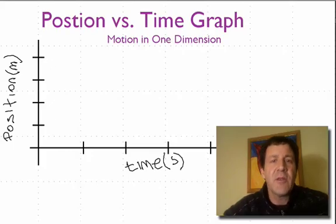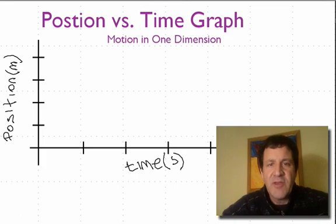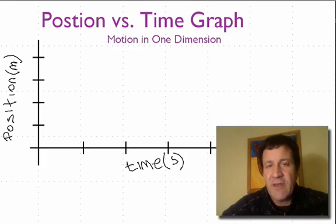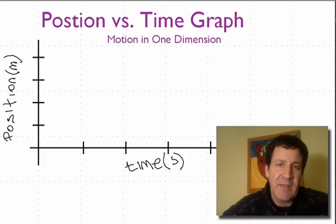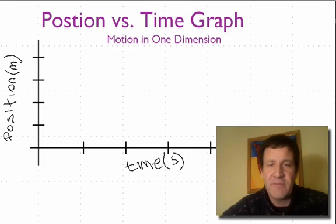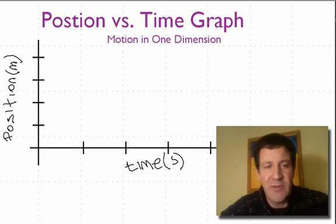In this video, I'm going to go over some more information about position versus time graphs. This is kind of part two of position versus time graphs. In this one, we're going to talk about what the curve or what the lines will look like if the object is speeding up or slowing down.